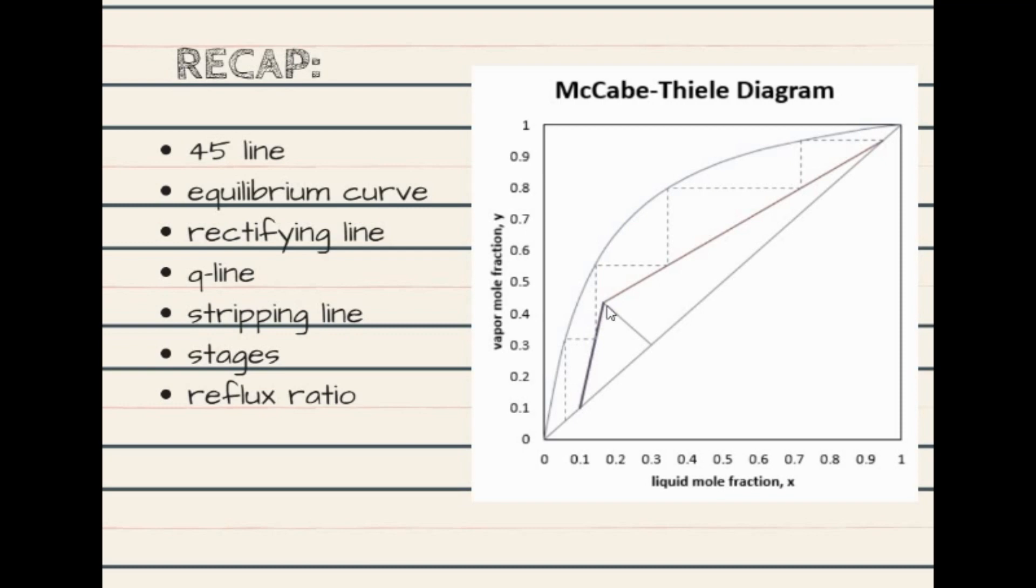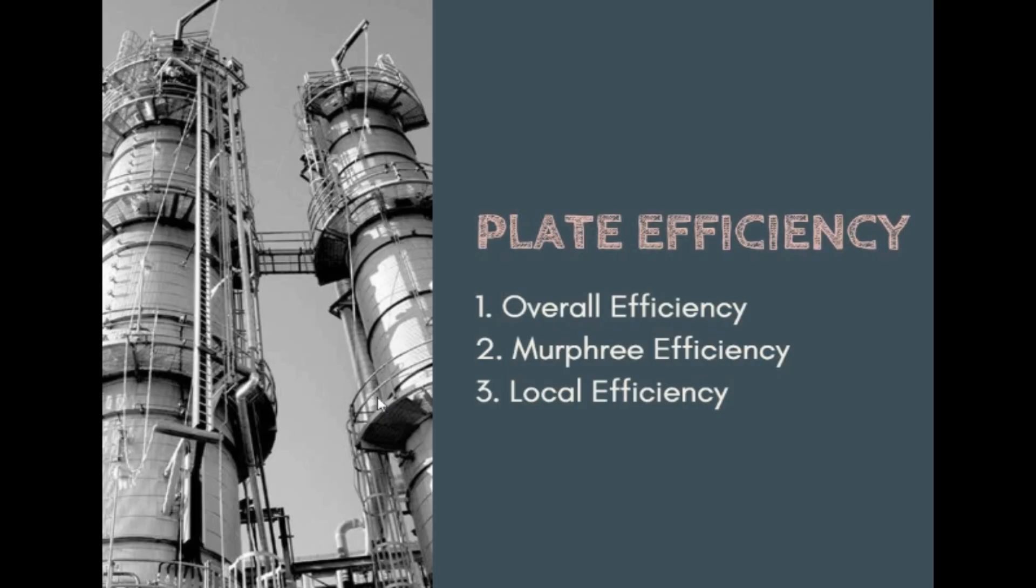This Q line here is where you introduce your feed. Once you establish the operating lines, you can now get the stages. Also, we must not forget the reflux ratio, which is L over D. L being the liquid flow rate from the reflux drum and D being the flow rate of the distillate, also called the top product.